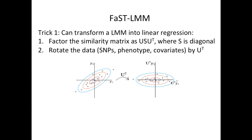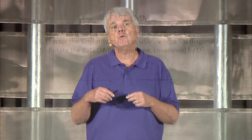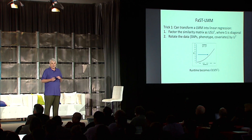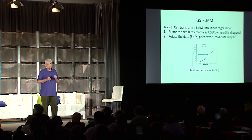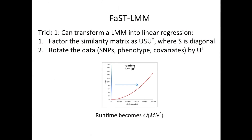Let me give you a flavor for these algebraic tricks. There are two tricks, basically. The first trick is to take this similarity matrix and factor it — we do what's called a spectral decomposition. Then you take one of these factors and use it to rotate your data: rotate the SNPs, rotate the phenotype. When you do that, you transform the linear mixed model into linear regression, and in doing that you pick up one factor of n speedup. So now instead of being cubic in n, we're now quadratic in n.